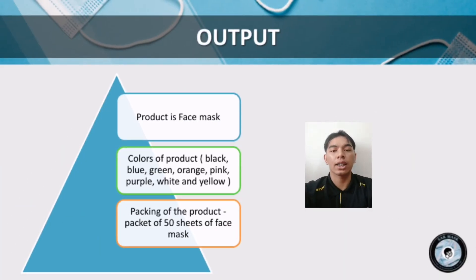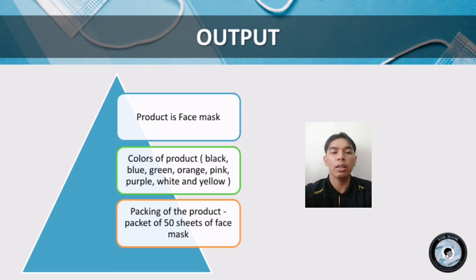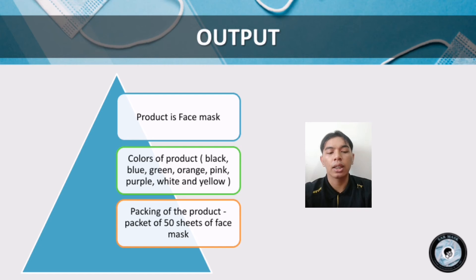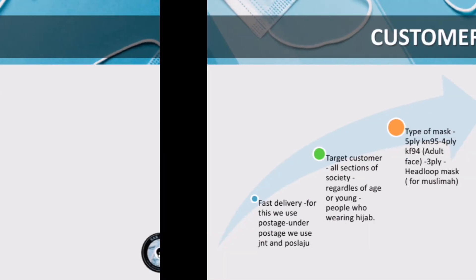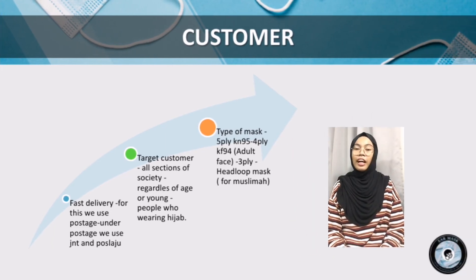Next is the output. The product is a Facemask. The colors of the product are black, blue, green, orange, pink, purple, white, and yellow. The packing of the product is a packet of 50 sheets of Facemask. Thank you to the presenter.